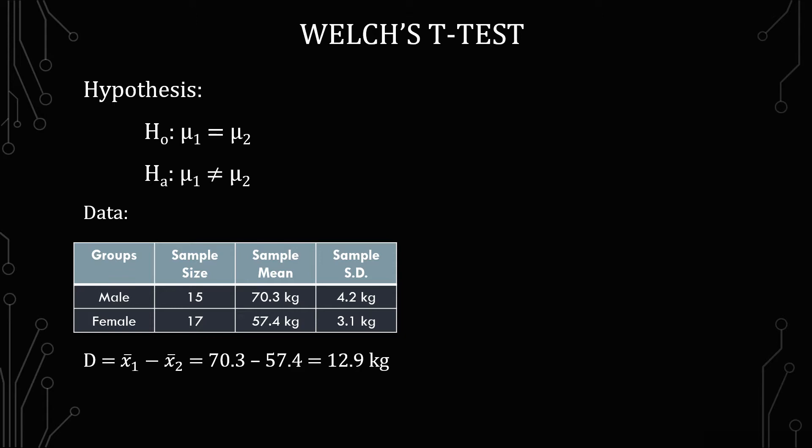So I've already gone ahead and done the difference between the average of the males and the average of the females and we get 12.9. These are exactly the same numbers I use for the unpaired t-test or independent t-test because I want you to be able to see the difference here.